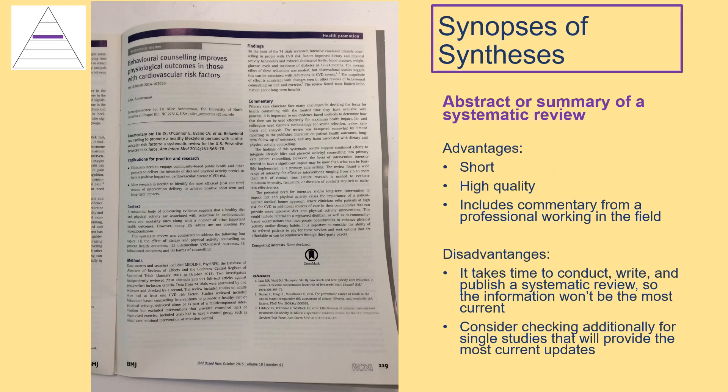Note the critical appraisal that has taken place up to this point as a single study has moved up the pyramid to synopses of single studies, synthesis, and now we move on to synopses of synthesis. In the same way that synopses of single studies summarize single studies, a synopsis of synthesis summarizes one systematic review. As we discussed with synopses of single studies, there are some advantages to a synopsis: it's short — what you see on the screen is the full synopsis. The systematic review had to be of high quality before it would be included in an abstracting journal. And in most cases, it will include commentary written by a professional in the field who will give real-world application to the information provided in the systematic review.